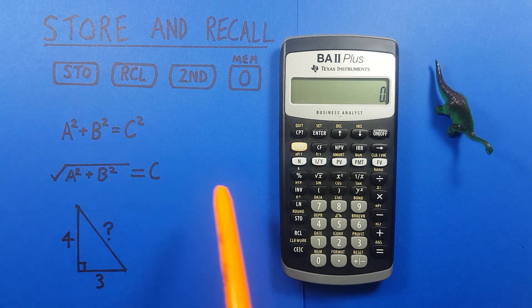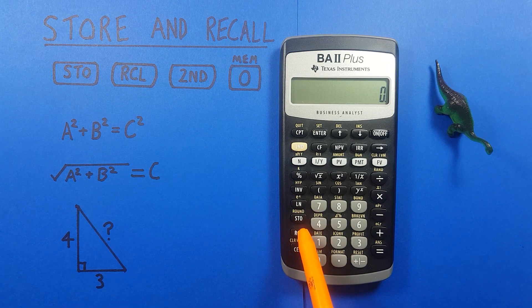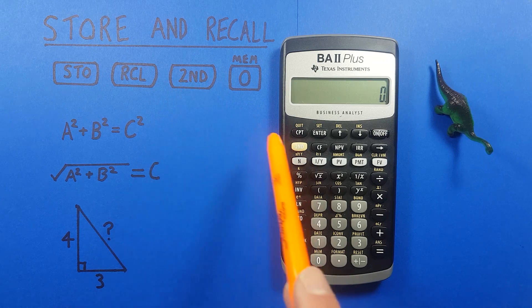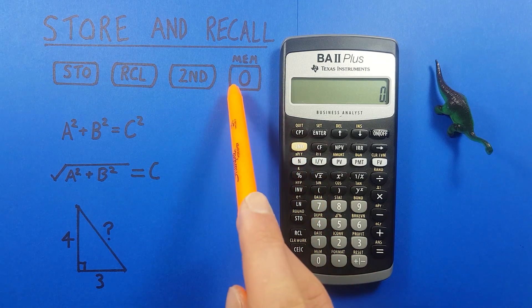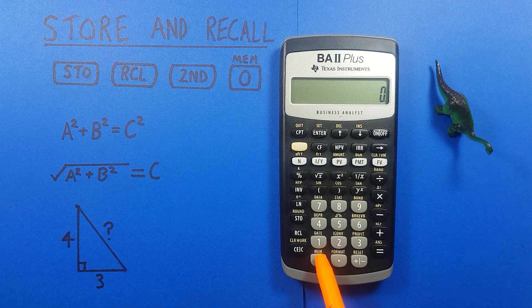To do that we'll be using the STO key that looks like this located here, the RCL key that looks like this located here, the second function key that looks like this located here, and the zero key with the second function of memory that looks like this located down here.